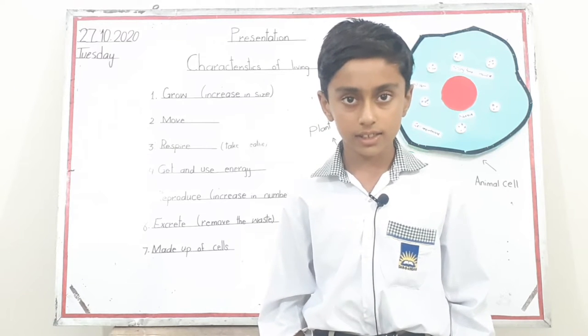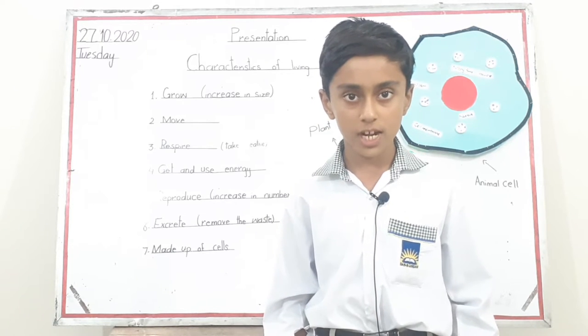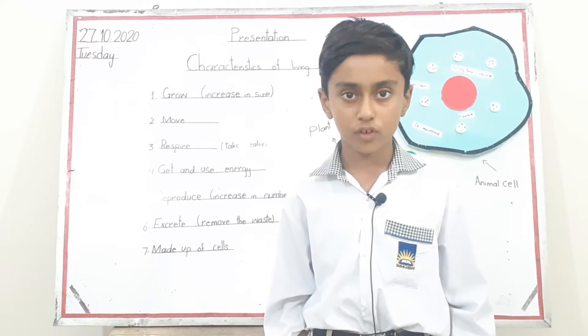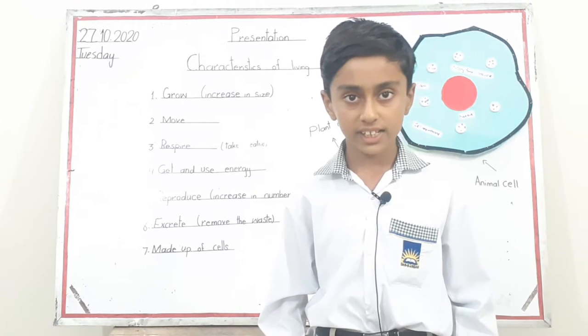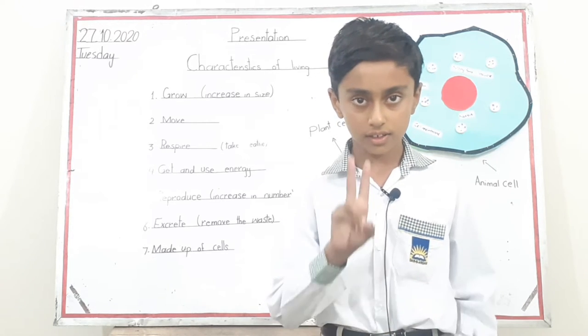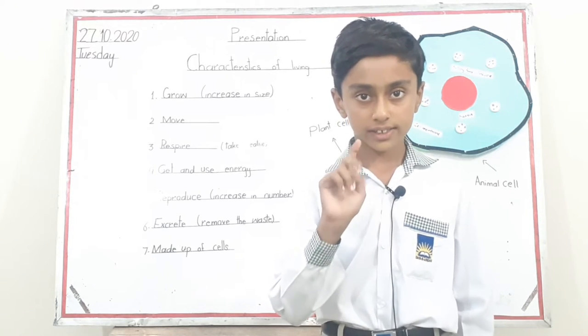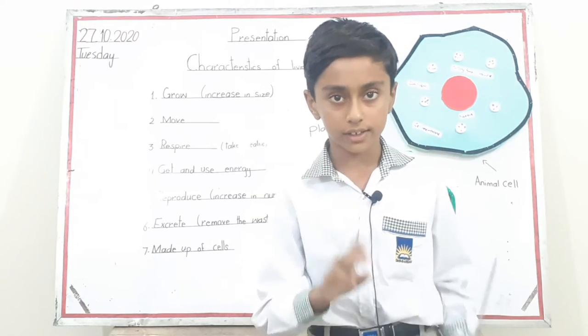Photosynthesis — the process of making food in plants is called photosynthesis. In photosynthesis, plants use three things: water, sunlight, and carbon dioxide.